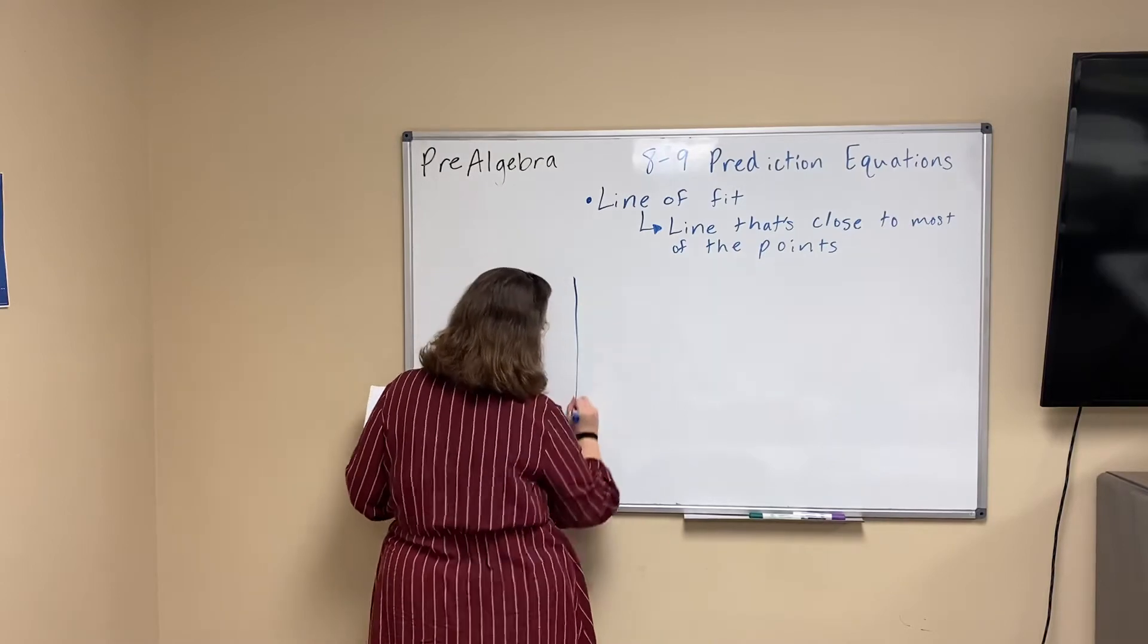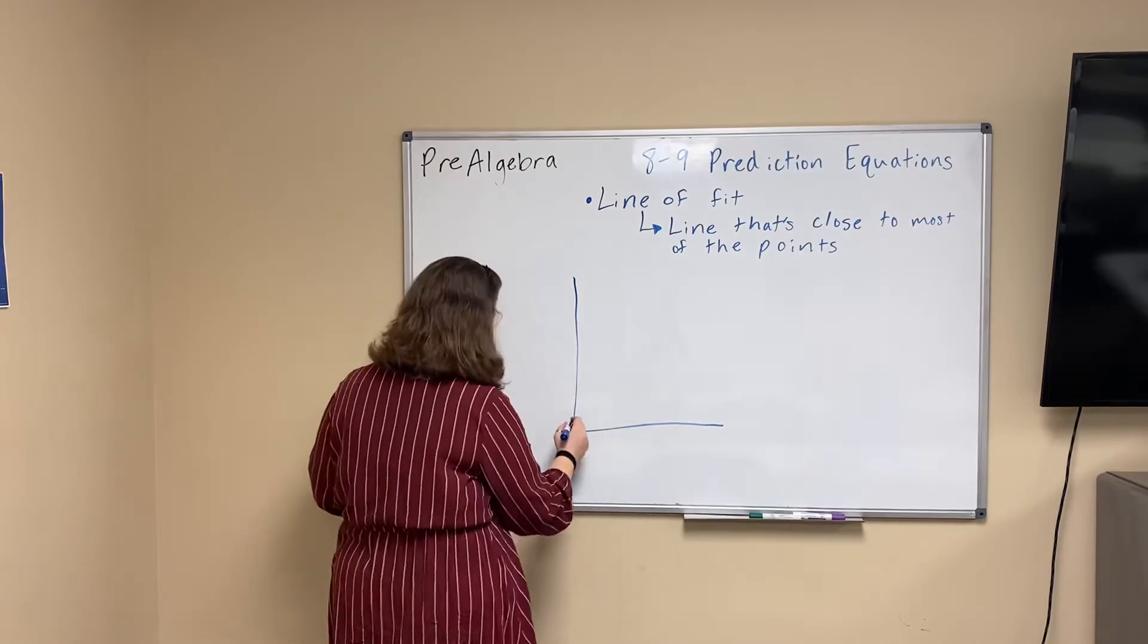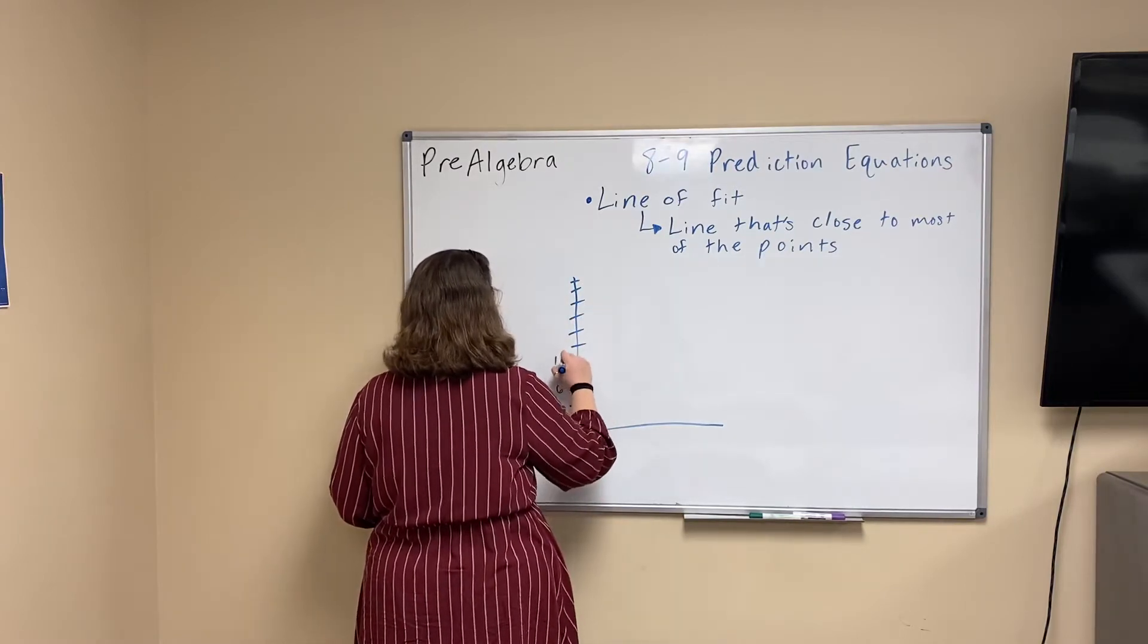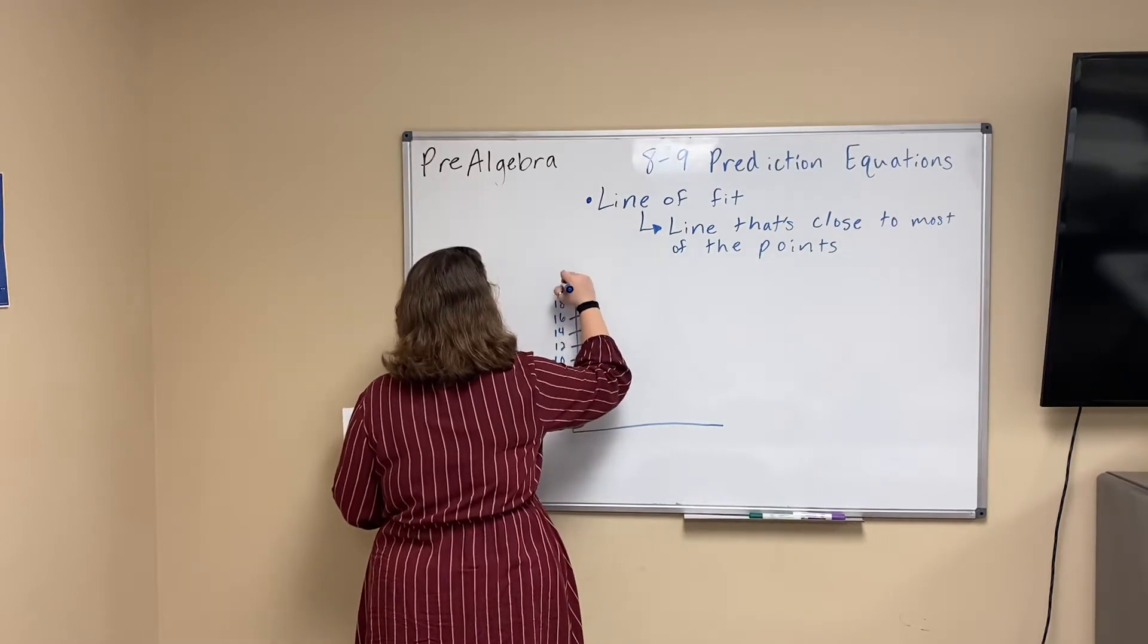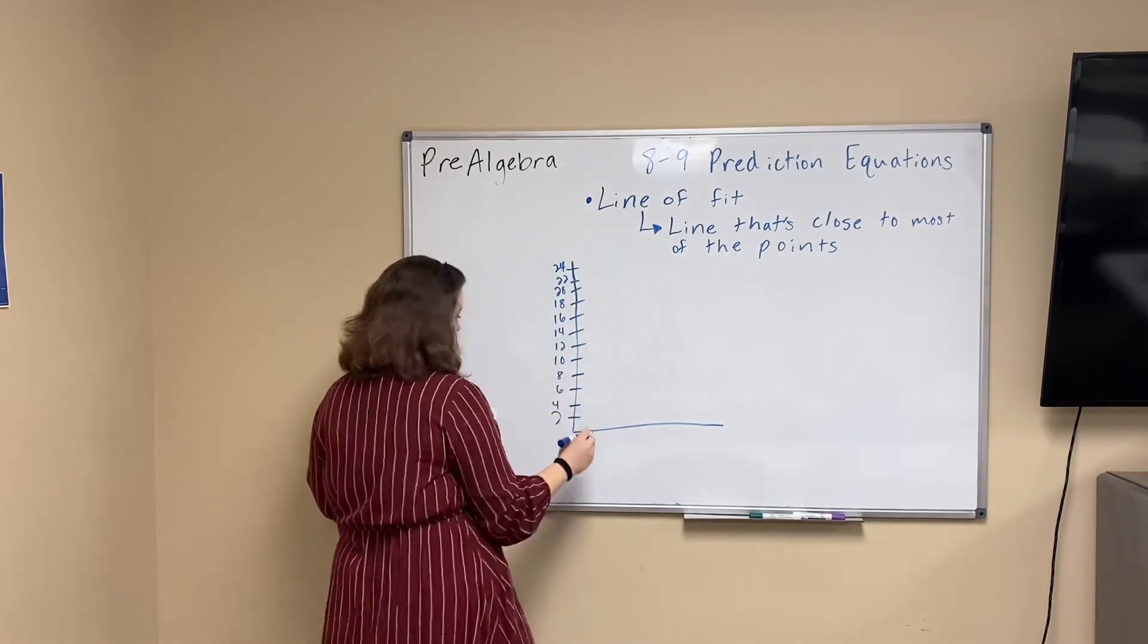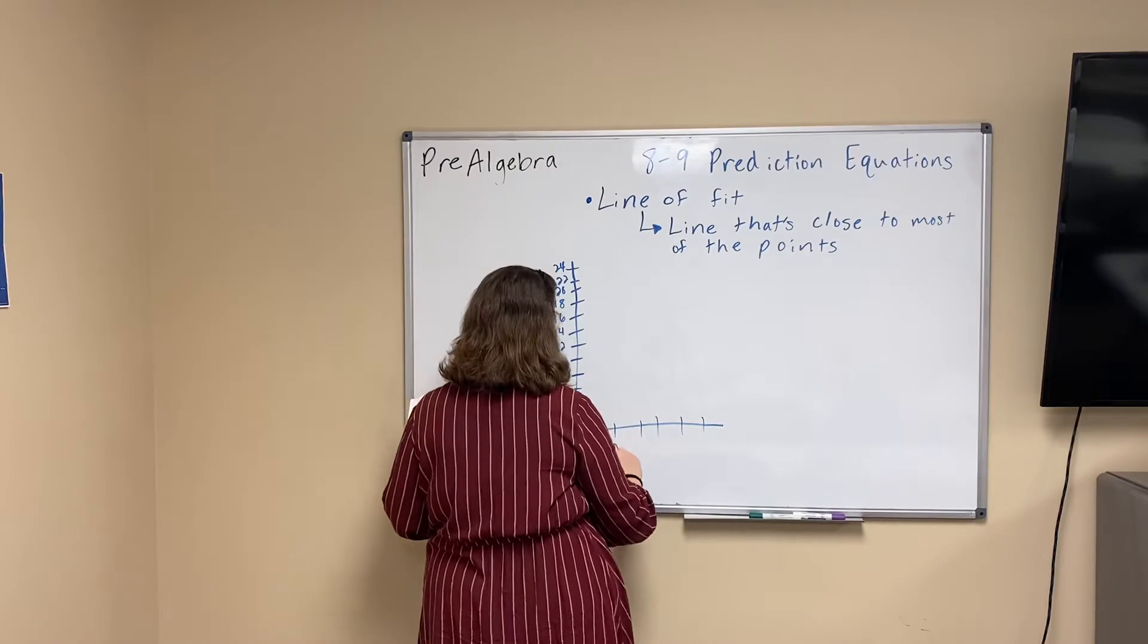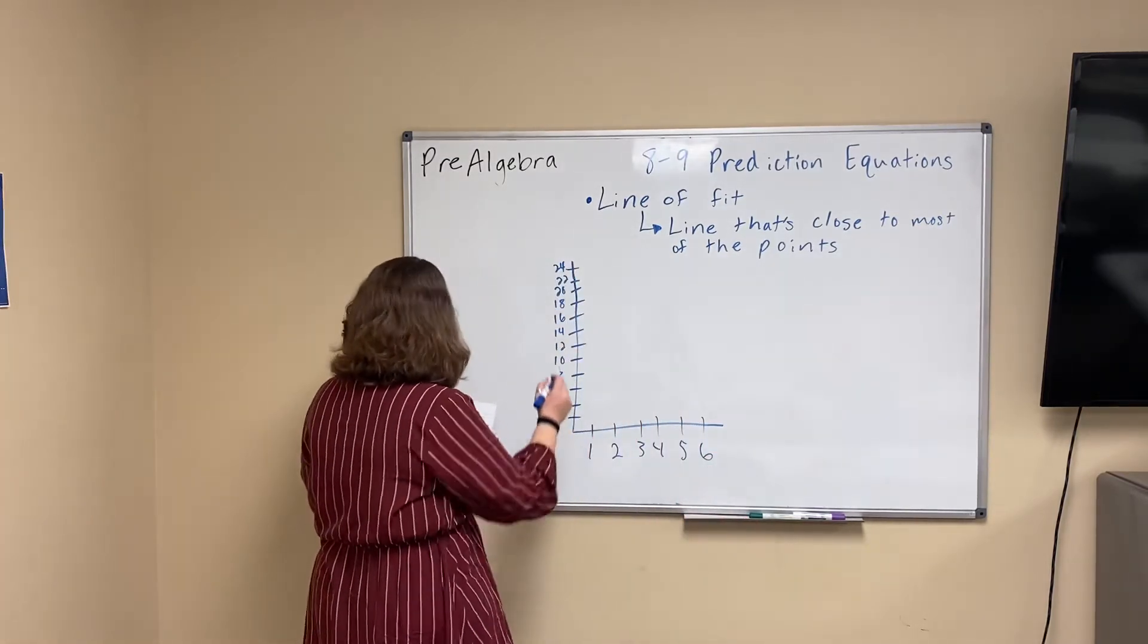So if I had, let's draw axes. Two, four, six, eight, ten, twelve, fourteen, sixteen, eighteen, twenty, twenty-two. These will be things like, usually it's years, like in our first year, our second year, third year, fourth year, fifth year, sixth year.